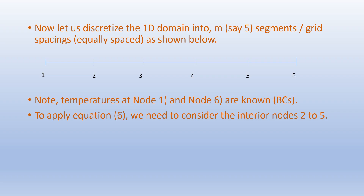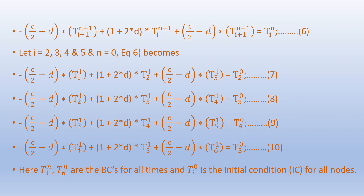Now let us discretize the 1D domain into m, say five segments or grid spacings, equally spaced. Note that we know the temperatures at the boundaries — node 1 and node 6 — which are the boundary conditions. To apply equation 6 we consider interior nodes from node 2 to node 5. Reproducing equation 6, if we let i equal 2, 3, 4, and 5 and n equals 0 for the first time step, equation 6 becomes equations 7, 8, 9, and 10. Here T_1^n and T_6^n are known for all times, and T_i^0 is the initial condition for all interior nodes.